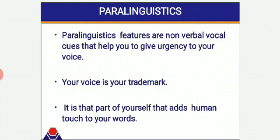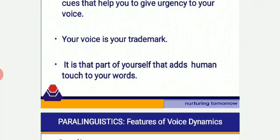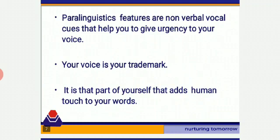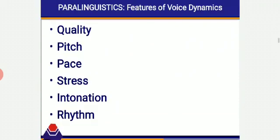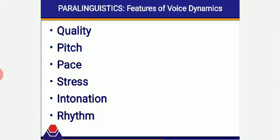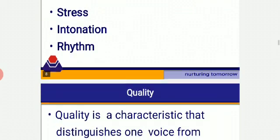The very important part of presentation strategies and oral communication is paralinguistics. Paralinguistics features are the non-verbal vocal cues that help you to give urgency to your voice. Your voice is your trademark — it is that part of yourself that adds a human touch to your words. A computer voice, for example, does not have emotions. So there are certain features of voice dynamics: quality, pitch, pace, stress, intonation and rhythm. We are going to discuss them one by one.